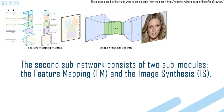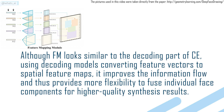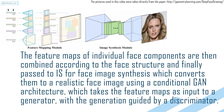The second subnetwork consists of two submodules: feature mapping and image synthesis. Although the feature mapping module looks similar to the decoding part of the Component Embedding module, using decoding models to convert feature vectors to spatial feature maps, it improves information flow and provides more flexibility to fuse individual face components for higher-quality synthesis. The feature maps of individual face components are then combined according to face structure and passed to the image synthesis module, which converts them to a realistic face image using a conditional GAN architecture with a generator guided by a discriminator.